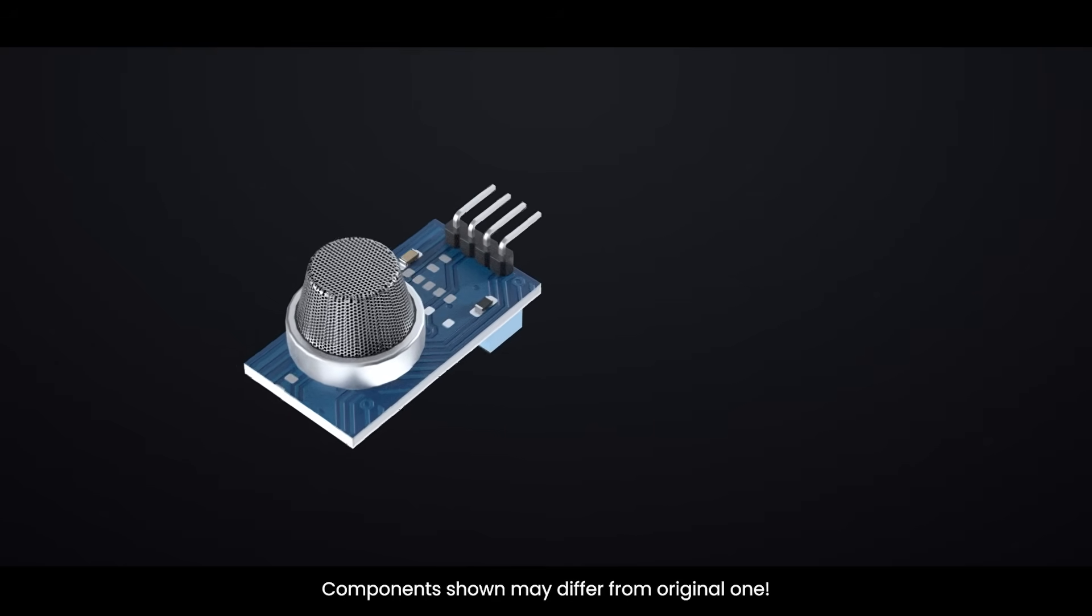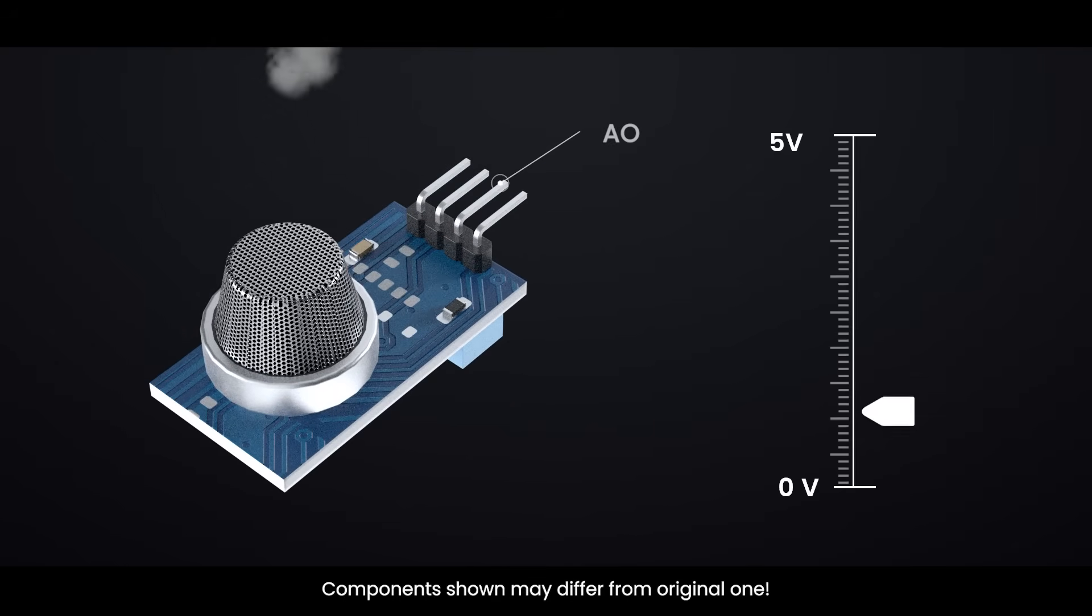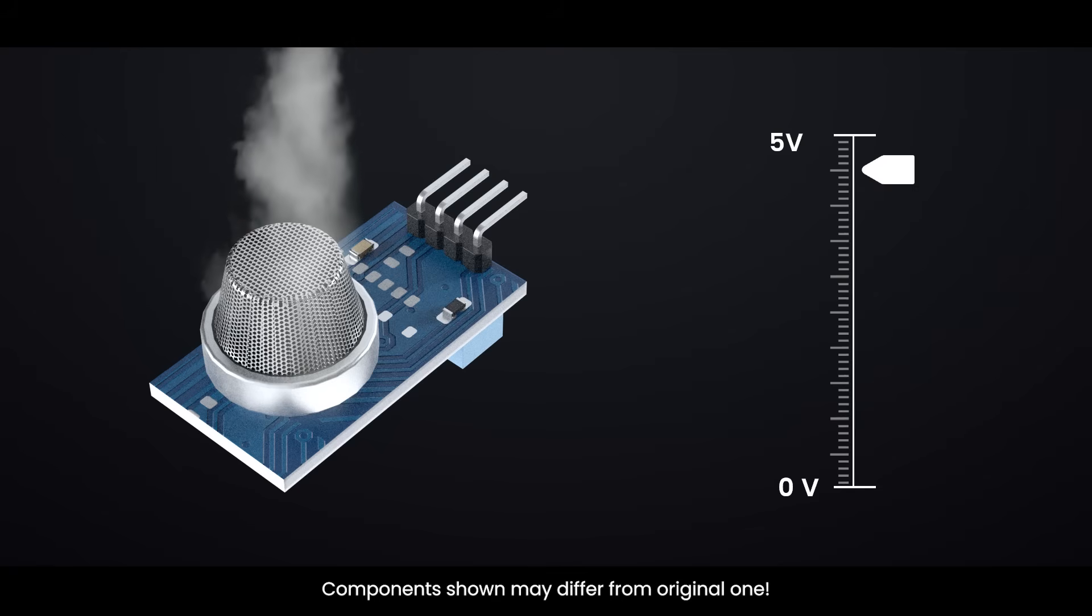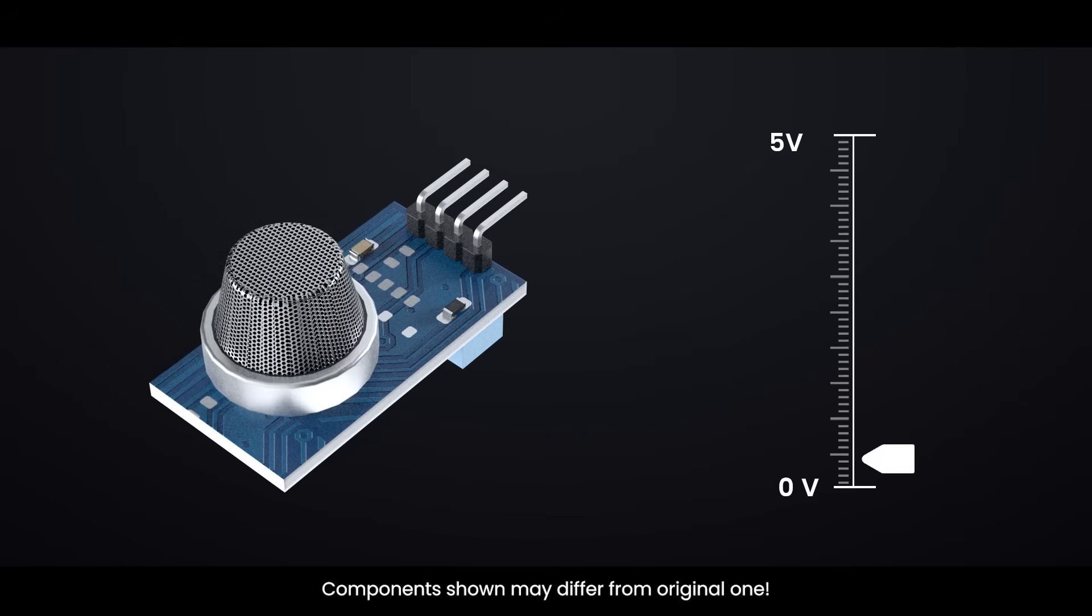The analog output from the AO pin changes based on the concentration of gas. When there's more gas in the air, the output voltage increases. When there's less gas, the output voltage decreases. The animation below demonstrates this relationship between gas concentration and output voltage.